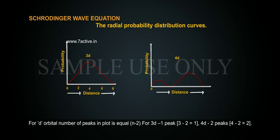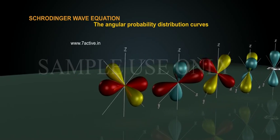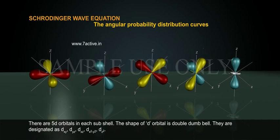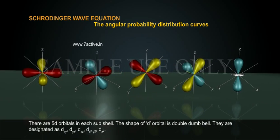For 4D, 2 peaks, or 4 minus 2 is equal to 2. The angular probability distribution curves: There are 5 D orbitals in each subshell.